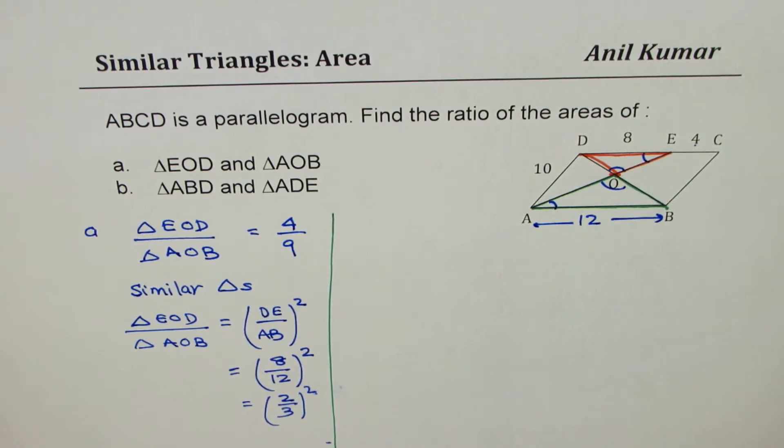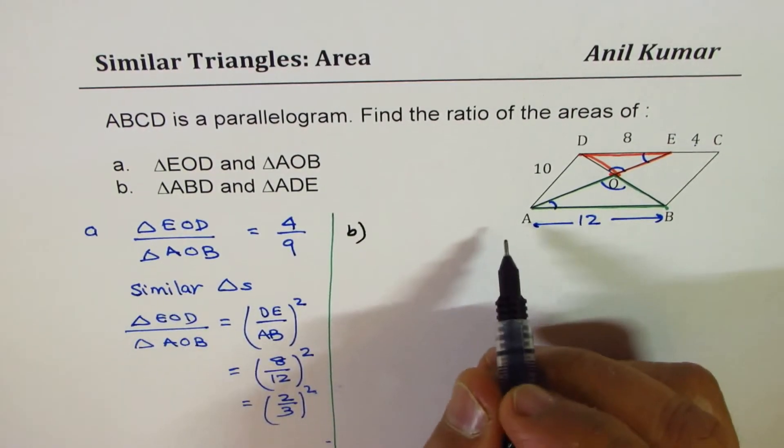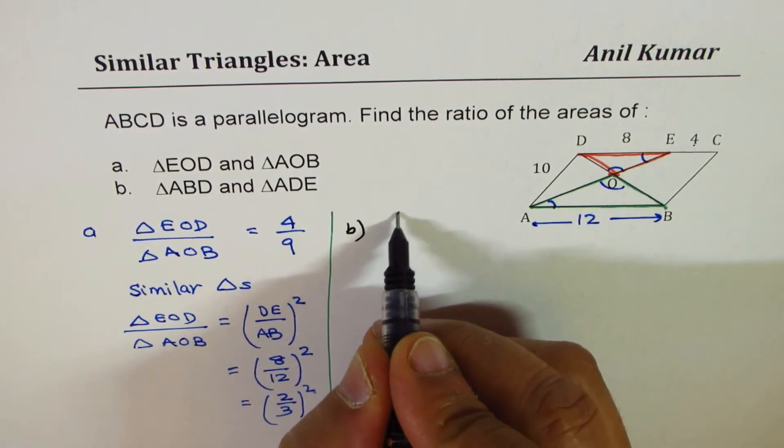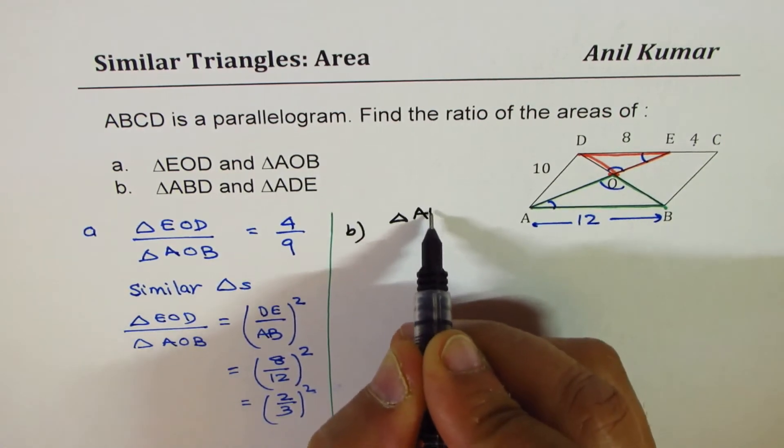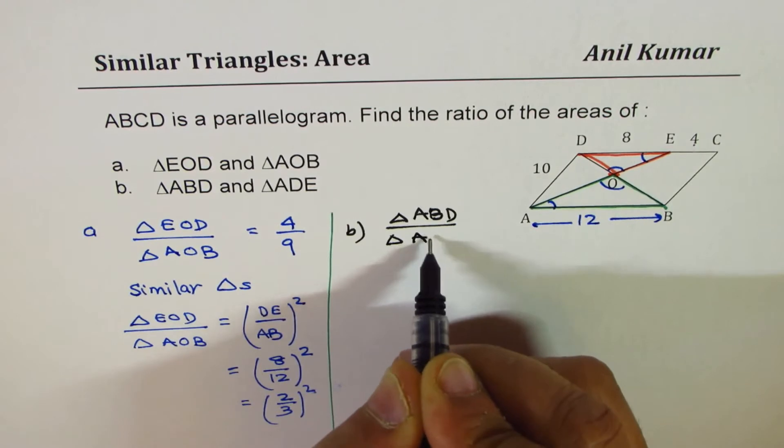Now let us look into part B. We are now talking about the triangle, let's write down, triangle ABD to triangle ADE.